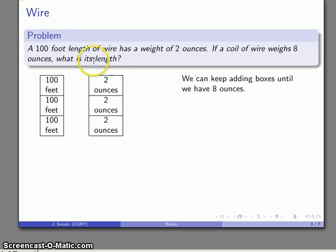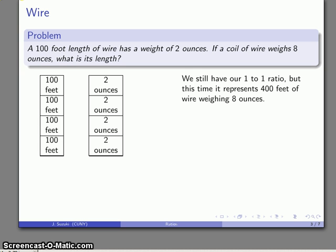I'll add another box. That's two, four, six ounces. I'll add one more box. There's two, four, six, eight ounces of wire here. One, two, three, four hundred feet of wire over here. I still have this ratio one thing to one thing. My ratio is still there, but this time I have 400 feet of wire representing eight ounces of weight. I can now answer the question, if I have a coil of wire that weighs eight ounces, well here it is, then what's the length? Well, here it is, 400 feet.